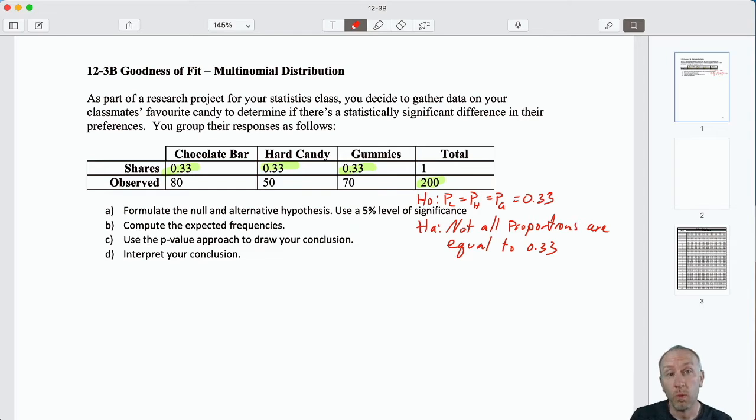So we start off by calculating our expected frequencies. If the null is true, what would we expect to see? Well, we would expect all of those values to be equal to 0.33. So if I look at our observed frequency, what would I expect to see? Well I surveyed 200 people, I would expect if the null hypothesis is true, I would expect 66 people would have preferred the chocolate bar.